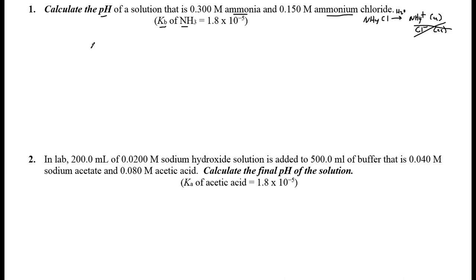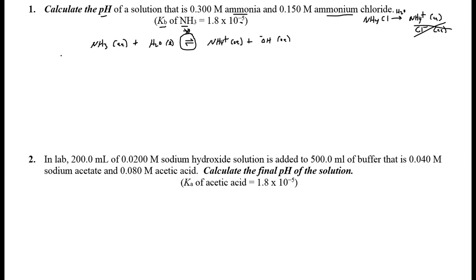We've got ammonia — NH3 (aqueous) — reacting with water, which is a pure liquid. This is an equilibrium system, so you can't draw one-way arrows anymore; you've got to think about this being reversible. It's not going to go very far to the right because the Kb value is so small, but you still have the reversible reaction reaching equilibrium. So we have a base and water forming the conjugate acid NH4+ and OH- in solution.